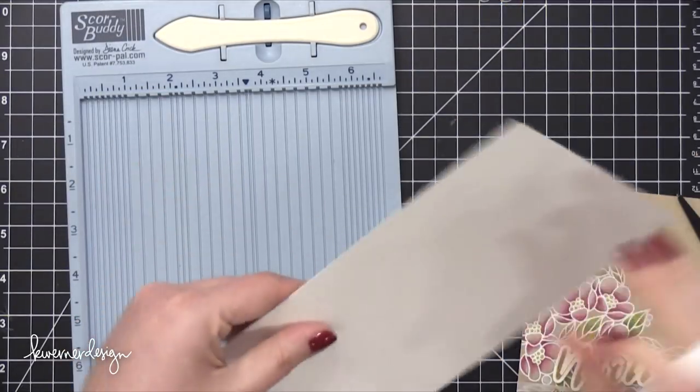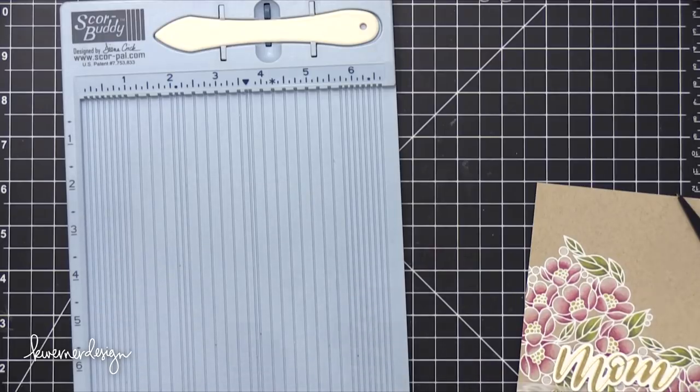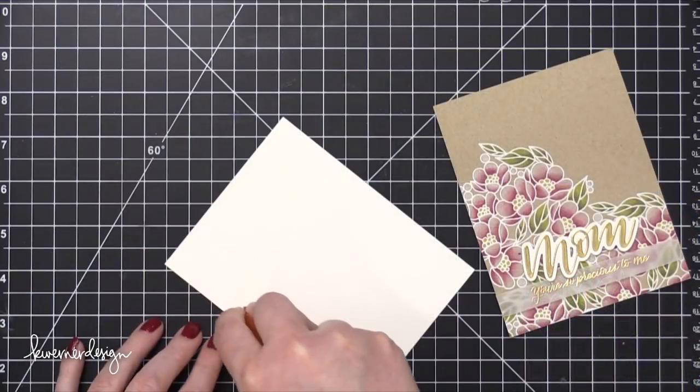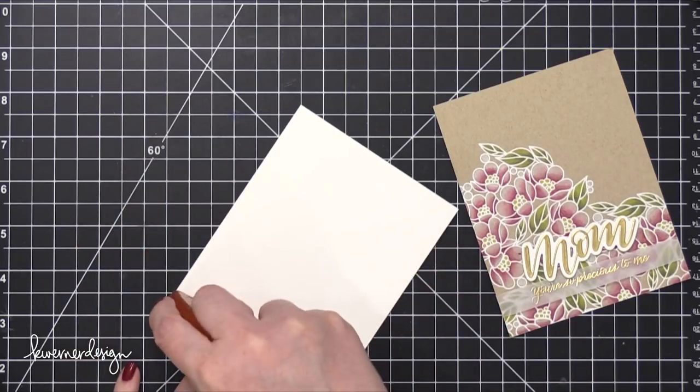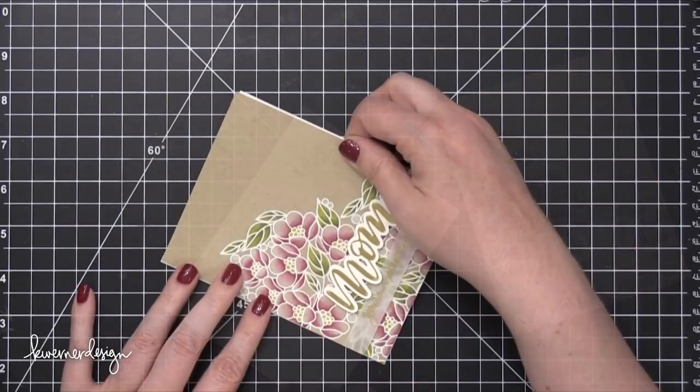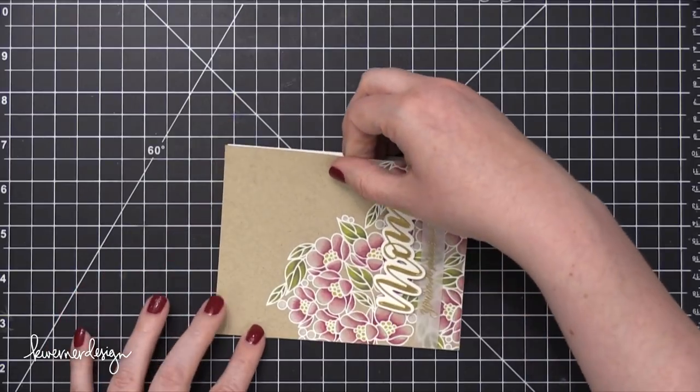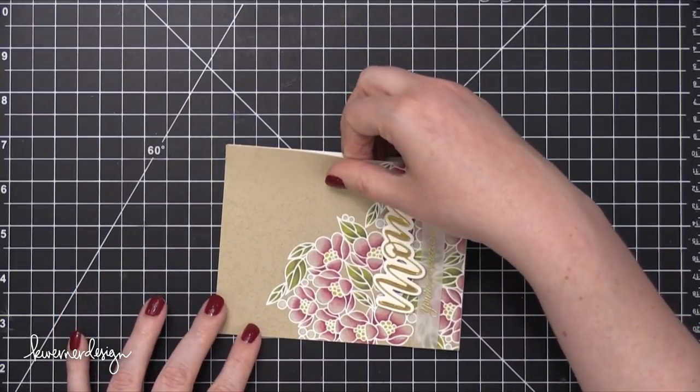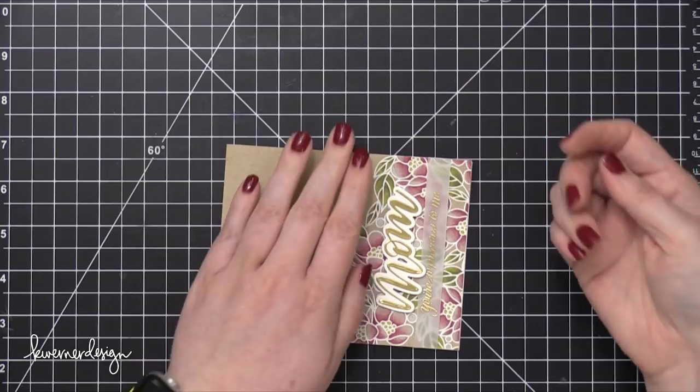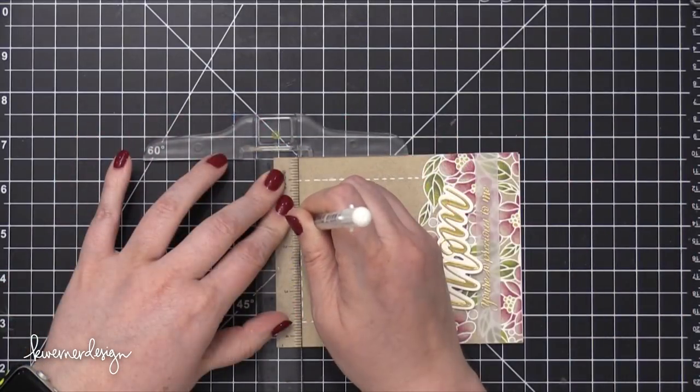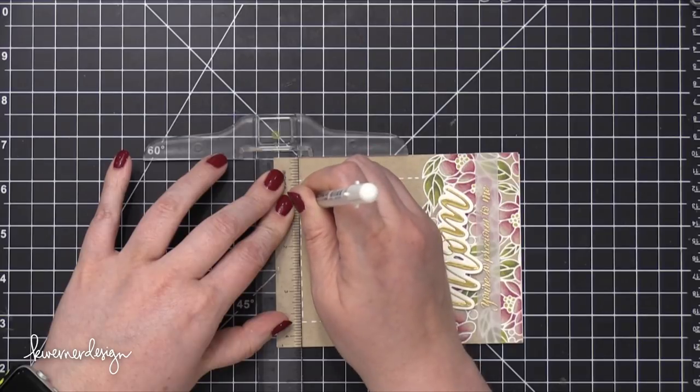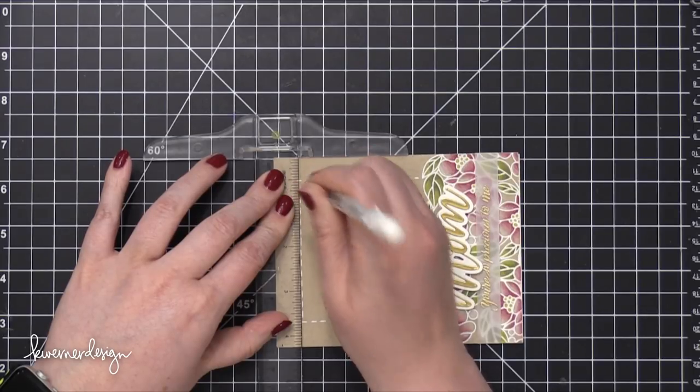For the card base, I'm using some Neenah Classic Crest Solar White. This is the 110 pound version. I scored that at five and a half to create a top folding card and then applied some more Tombow Extreme adhesive around the edges and a little bit in the center so that I could press this colored piece right on top. This is a really great way to make sure that you have a clean white interior of your card so you have plenty of white space to write a message.